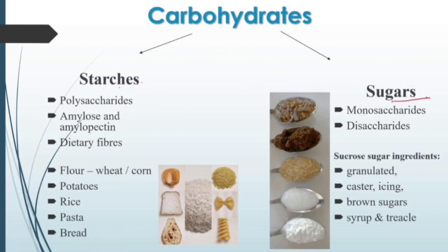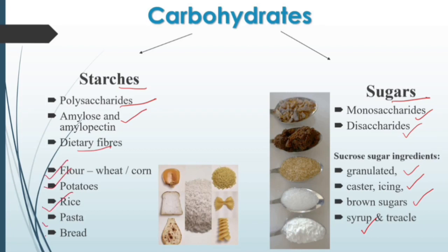Let's divide carbohydrates into two forms: sugars and starch. In sugars, the types include monosaccharides and disaccharides, which contain one or two sugar molecules. Examples are granulated sugar, castor or icing sugar, brown sugars, syrups, etc. In starch, the type is polysaccharides — made up of more than three sugar molecules — mostly composed of amylose and amylopectin. Dietary fibers also come under starch, with examples like flour, potatoes, rice, pasta, and bread.